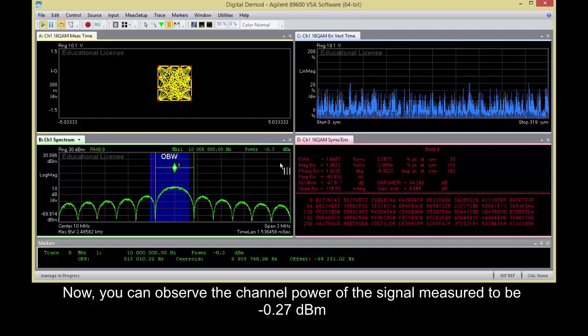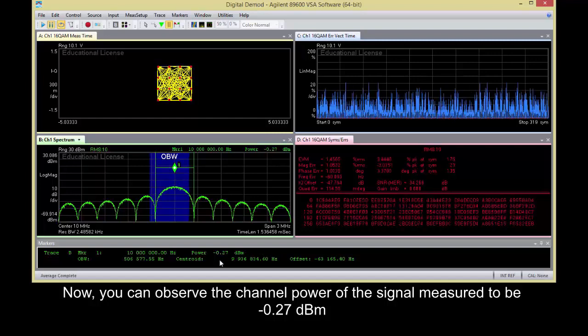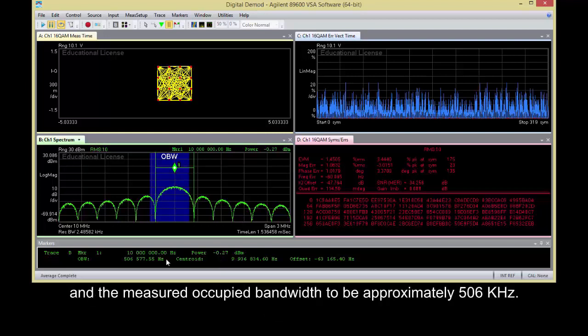Now you can observe the channel power of the signal measured to be minus 0.27 dBm, and the measured occupied bandwidth to be approximately 506 kHz.